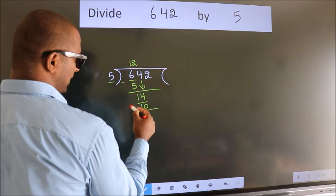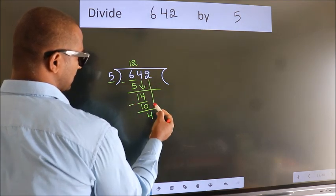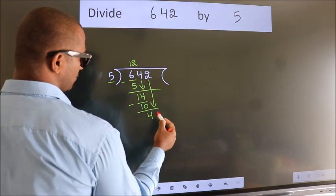Now, we subtract. We get 4. After this, bring down the beside number. So, 2 down.